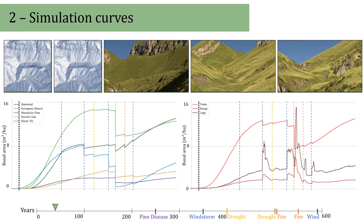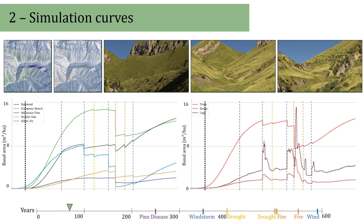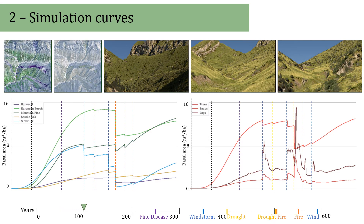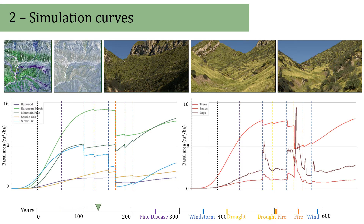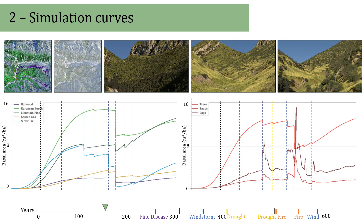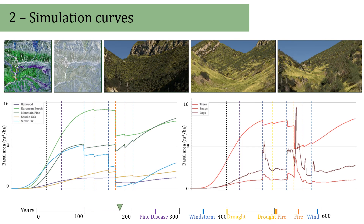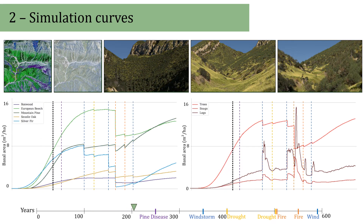We indicate the impact of different events on specific species in the left image, with the tree state shown in the right curves. For example, events can dramatically change the proportion of species in the scene.